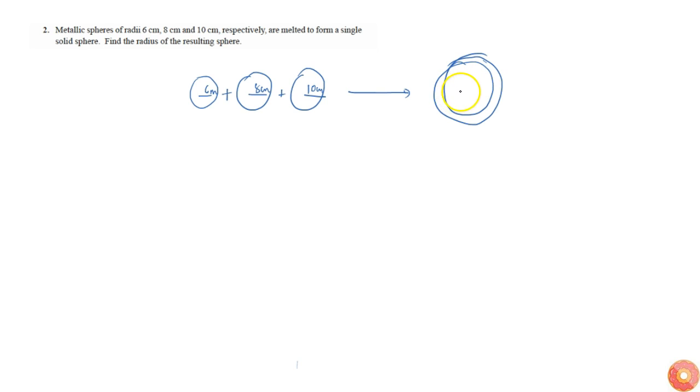This is a big sphere, and we are asked to find the radius of this big one. So we know that the sum of all these three volumes, that is volume one plus volume two plus volume three, is equal to the volume of this big sphere.